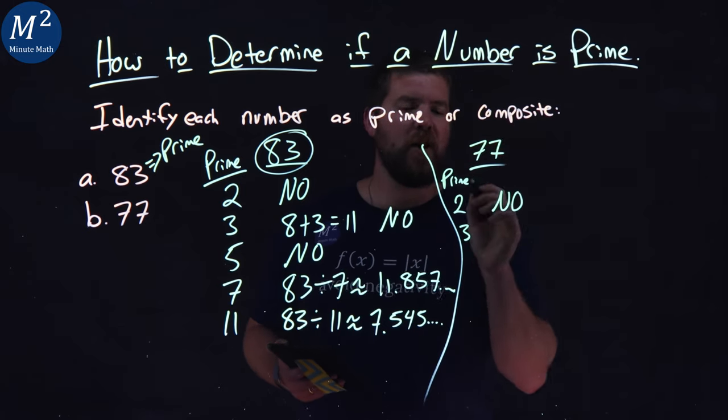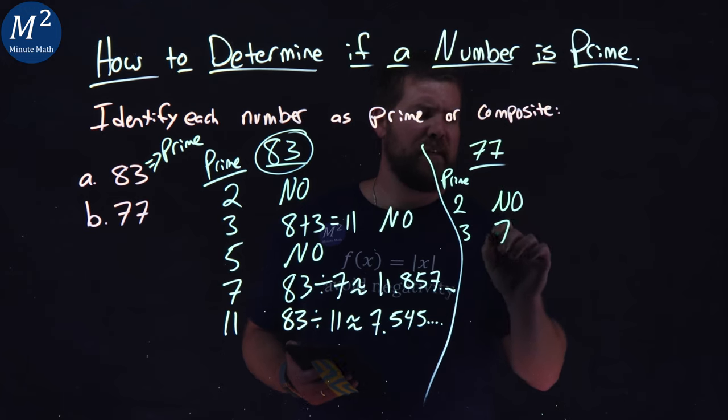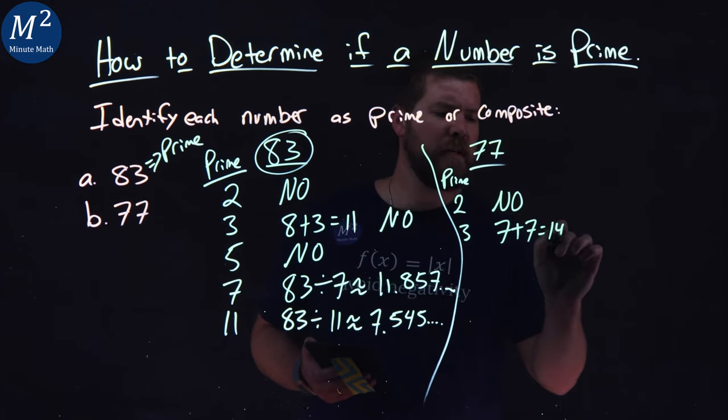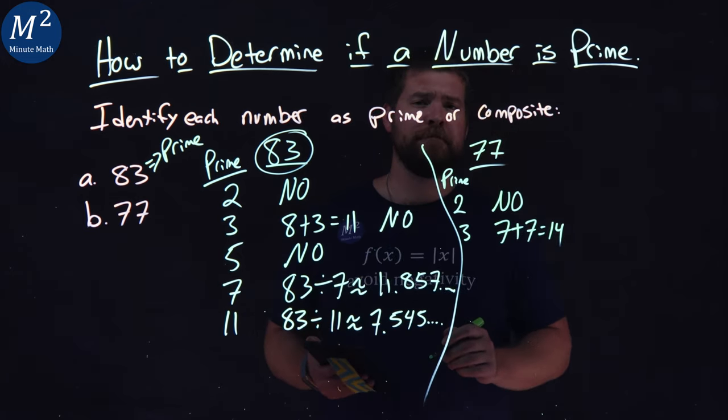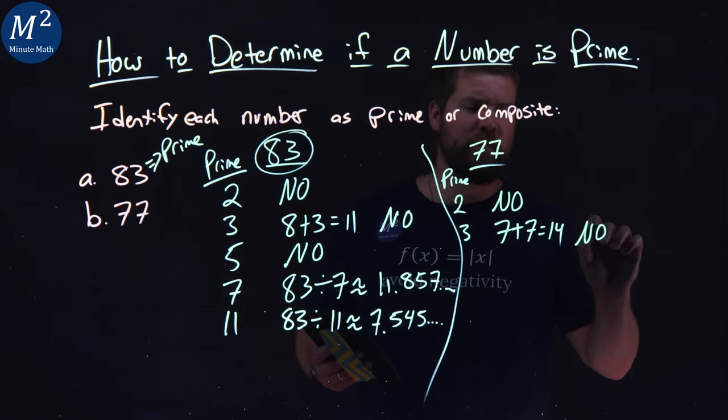We got that one down. What about 3? Check. 7 plus 7 is 14. Does 3 go into 14? No. Got that.